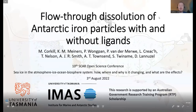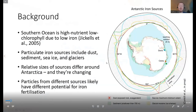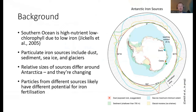Matt Corkill introduces the study, which is a big collaborative effort. The Southern Ocean is a high-nutrient, low-chlorophyll region largely due to low iron concentrations, and phytoplankton require iron for photosynthesis. Particulate sources around Antarctica that can alleviate iron limitation include dust, resuspended shallow sediment, sea ice melt, and glaciers — both pushing material into the water and melting to release material.